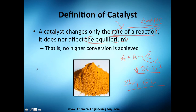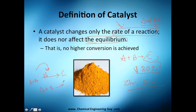However, certain catalysts are special cases. For example, if you have A and B and you add palladium, they will react to form C. But if you were to have only A and B with no catalyst, they would not react at all. So in some cases the catalyst is essential to produce the product.